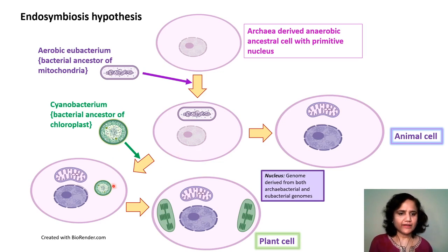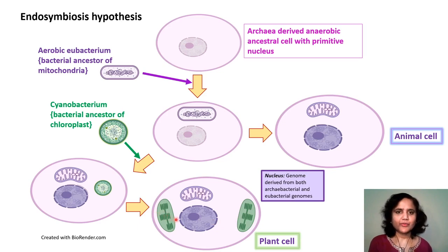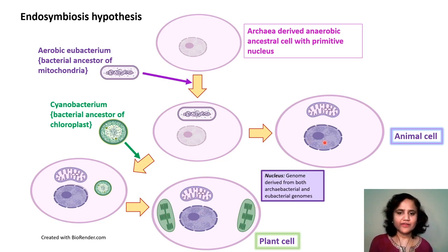This ultimately produced plant cells, as the cyanobacteria may have evolved into the chloroplast found in current day plant cells. The nuclear genome in eukaryotes is derived both from the archaebacterial as well as the eubacterial genomes.